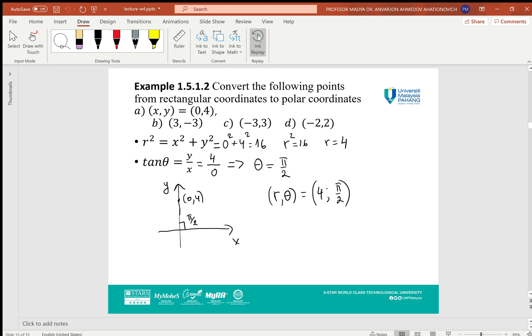Another example: convert the following points from rectangular coordinates to polar coordinates. For part a, (x,y) = (0,4). We apply the formulas: r² = 0² + 4² = 16, so r = 4. tan θ = 4/0, and θ = π/2 because at π/2 tangent is not defined or goes to infinity. You can see from the location of the point (0,4) on the y-axis.